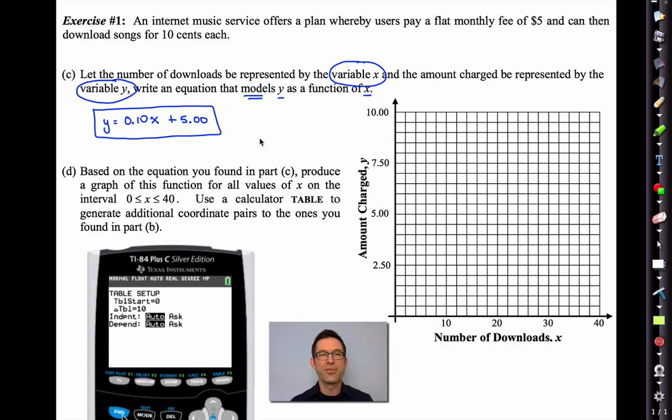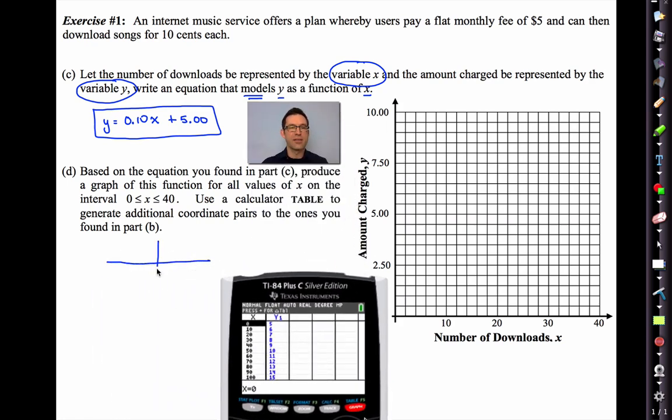That's kind of cool because that means every 10 downloads, I'm going to see something else. Let's go into my table. And look at that. Now you don't have to have your table set up exactly like me or like mine, but it is kind of nice. When there were zero downloads, we saw that our y output was 5, 10 downloads, our output was 6, 20 downloads, our output was 7, 30 downloads, our output was 8, and 40 downloads, our output was 9.